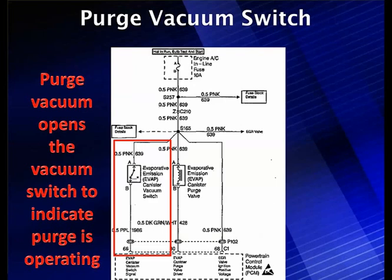Here are the specifics on our canister purge vacuum switch. The top of the canister vacuum switch is connected to pin A, which goes up to B+ via the AC fuse. The bottom goes to the PCM. B+ is hot in run, bulb test, or start — so in every condition except engine off, we'll have B+ on pin A. Pin B is used by the computer at PCM pin 66; it's a ground-enabled, low-side driver.